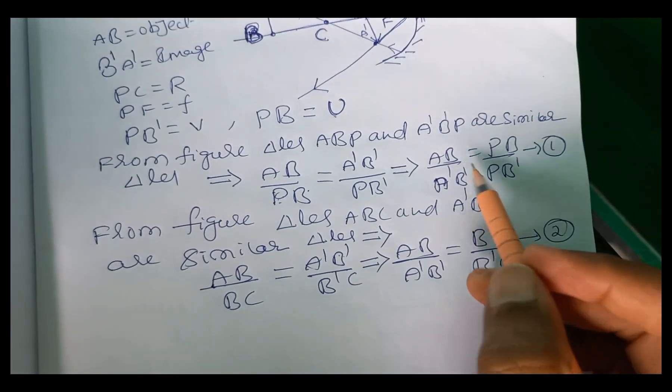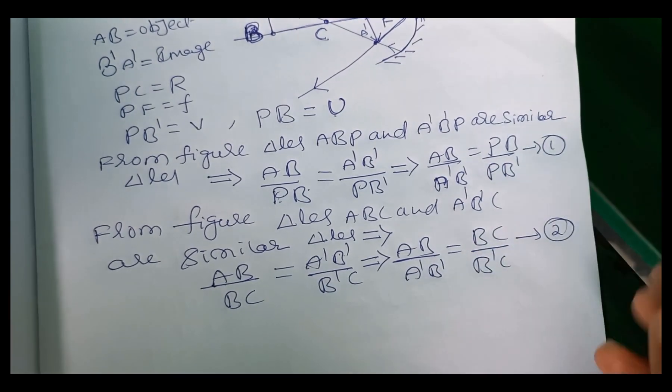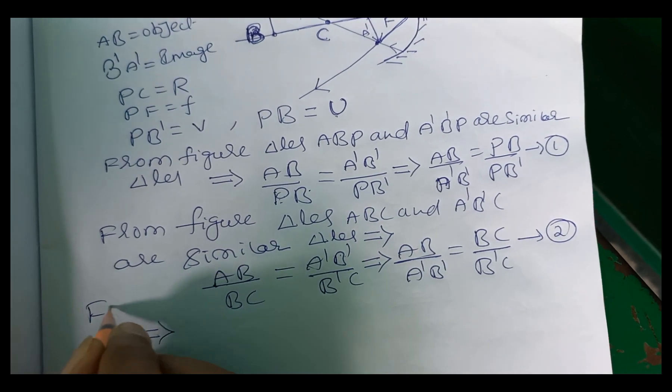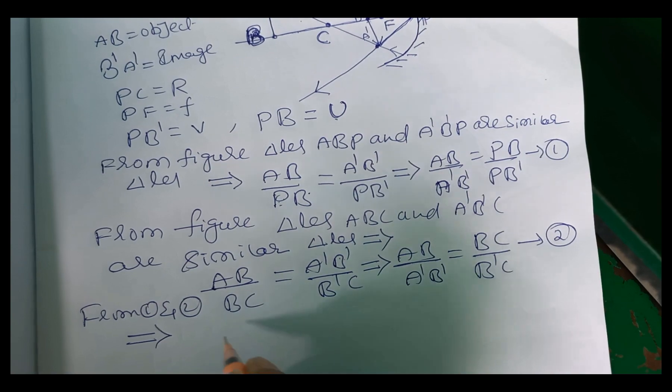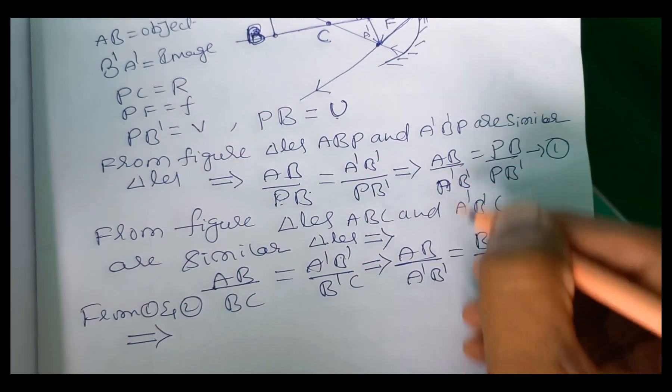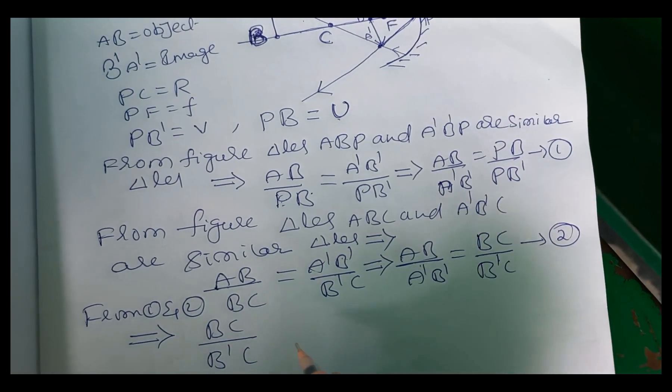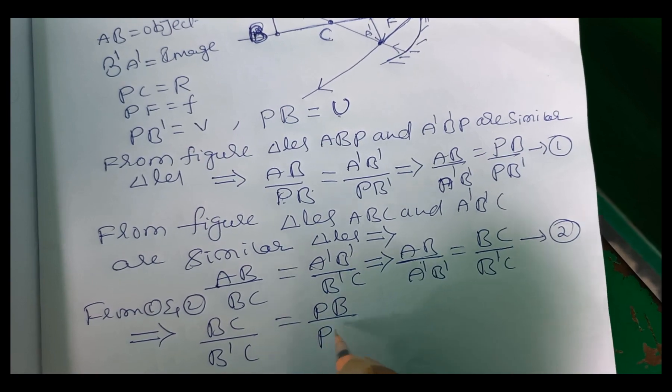So from equation 1 and 2, left side, the ratio is equal AB by A dash B dash, AB by A dash B dash. So right side, so this implies, so from equation 1 and 2, from equation 1 and 2, if you equate, then so BC by B dash C equal to PB by PB dash.